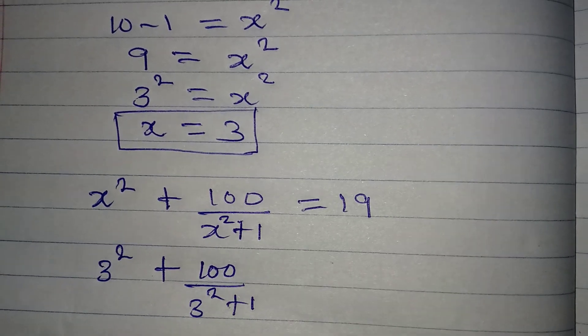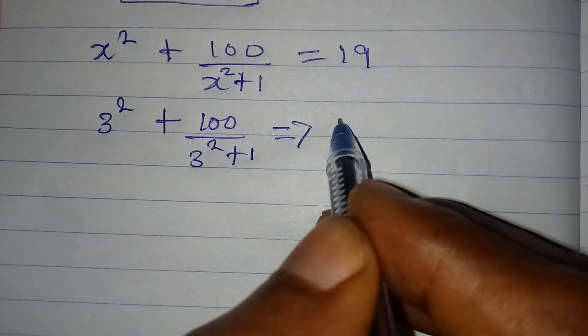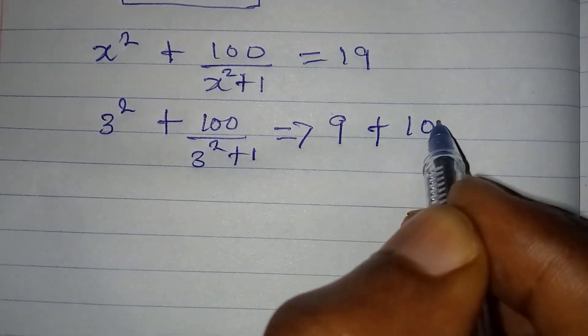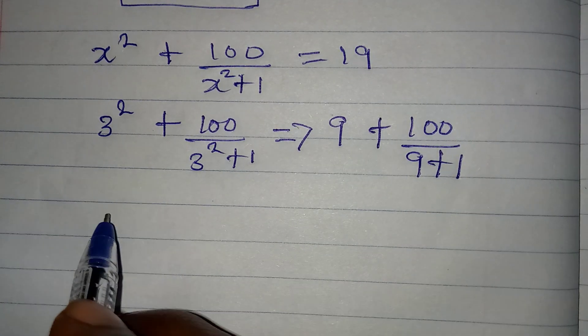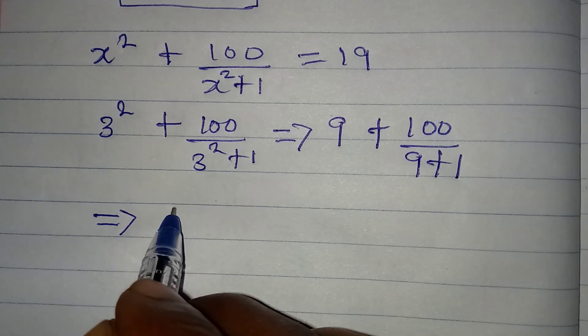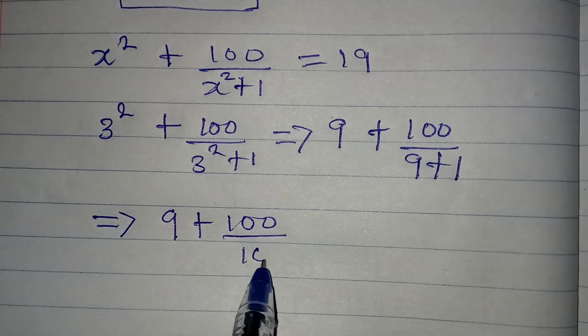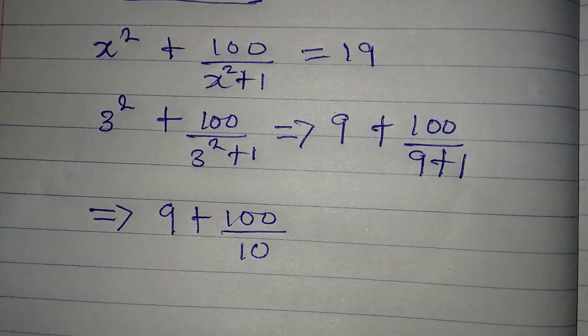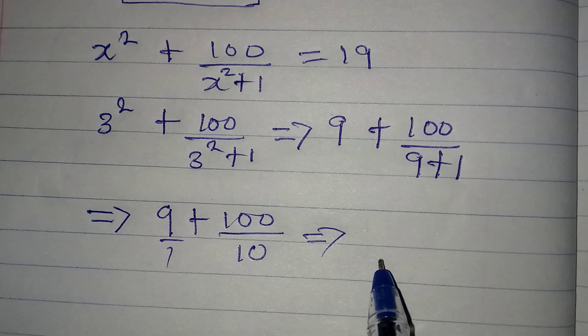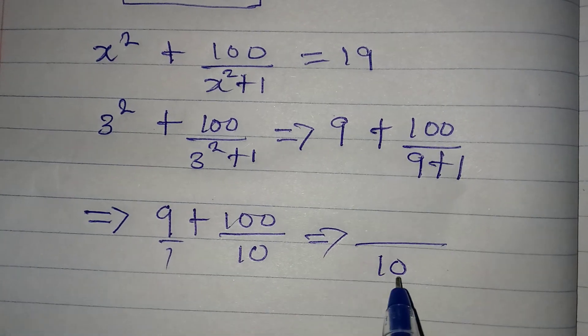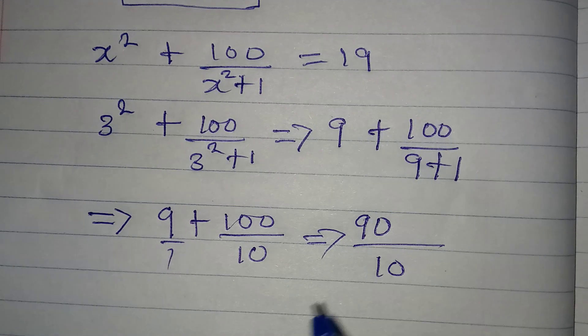Let's continue with this now. This will give us 9 plus 100 over 9 plus 1. Now let's continue with it. Here we're going to have 9 plus 100 over 10. Now we continue with this so that at the end of the day we find the LCM. The LCM here is 10. 10 divided by 1 is 10, times 9 is 90. So we have 90 over 10.